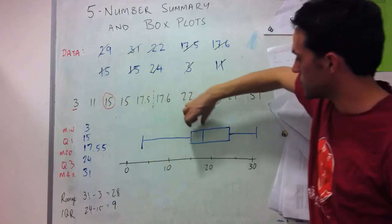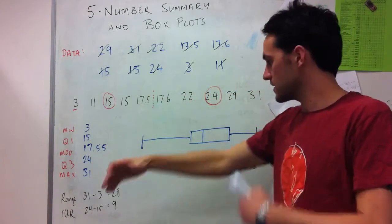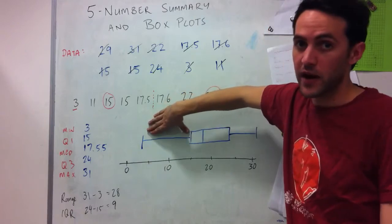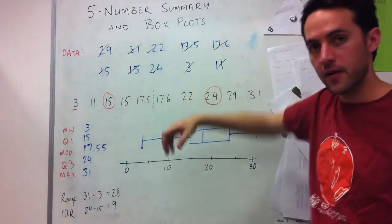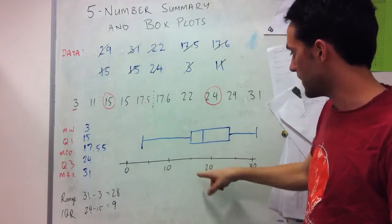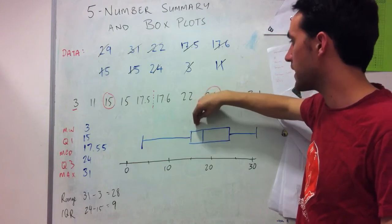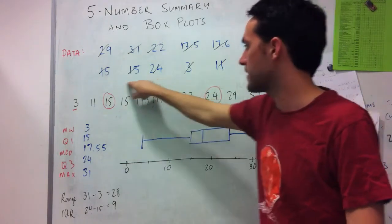So this box plot, each section represents 25% of the data. So when a section is larger, that means the data is spread over more values. When it's tied together, that means we've got more data densely close in.